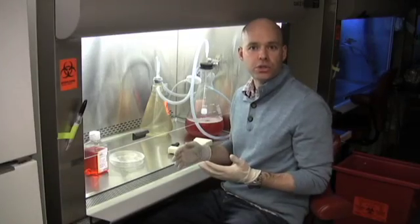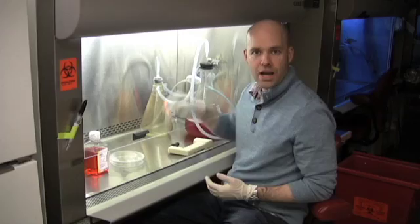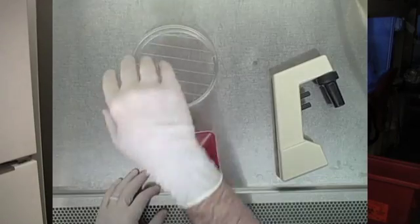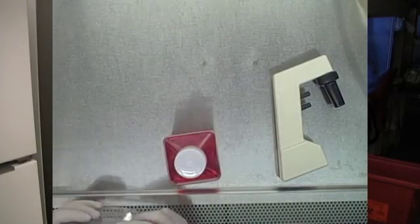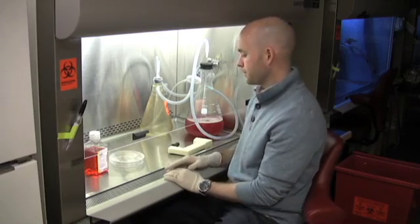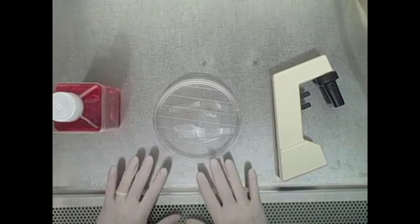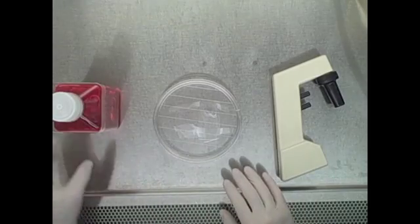Now when you're working in a tissue culture hood the flow goes from the top to the bottom so there's a strong downdraft inside the hood. Therefore you don't want to have your hand go over an open bottle or an open dish because that's a likely source of contamination. So the easiest way to set up a hood is to keep things separate so that you never have to reach over something else.